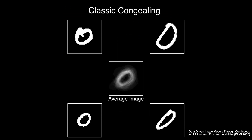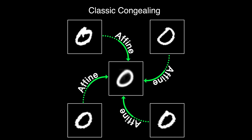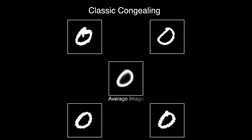Our method takes inspiration from the classic congealing work from Eric Learned Miller. Congealing showed that you can learn per-image affine transformations to bring a dataset into joint alignment in an unsupervised fashion. However, it only worked on simple datasets with limited appearance variation, like binarized MNIST images.